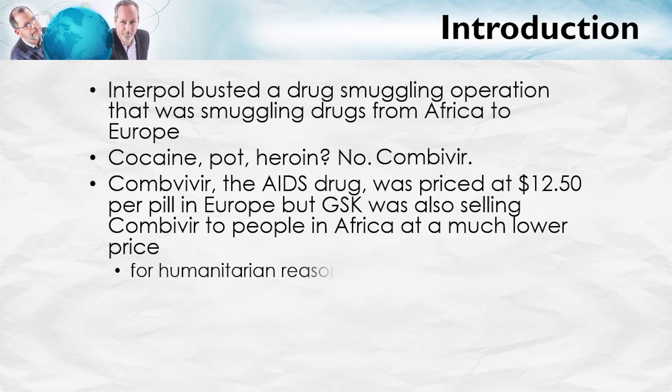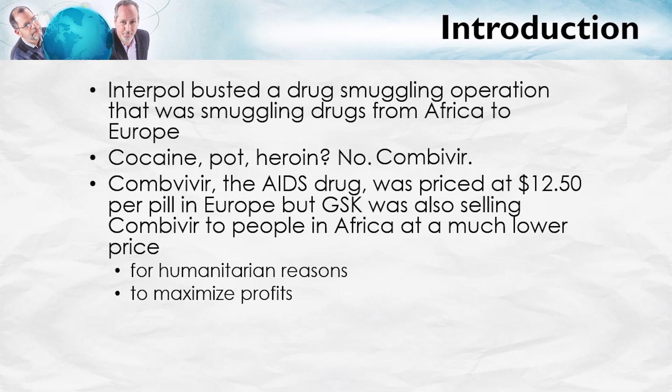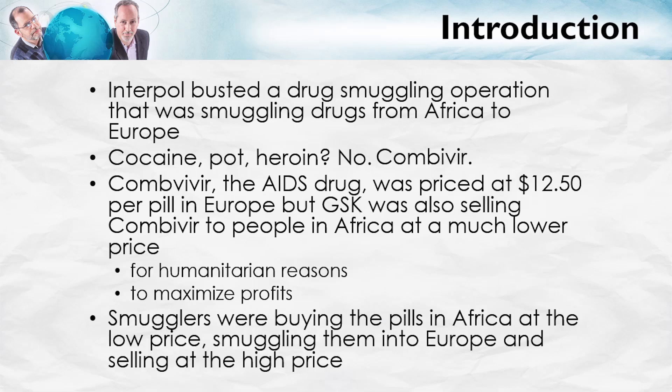How come? Well, for two reasons: first, for humanitarian reasons, and second, to maximize profits. The smugglers were buying the pills in Africa at the lower price, sending them to Europe, and then reselling them in Europe at the higher price.